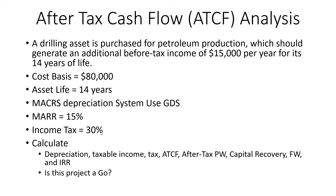The federal and state combined tax is 30%. Currently, the federal rate is 21% and the state rate varies. However, in this example, the total is 30%. Under this condition, we're going to calculate the depreciation, taxable income, tax, after-tax cash flow, after-tax present worth, capital recovery, and IRR, and also make a decision on this project whether to invest or not.